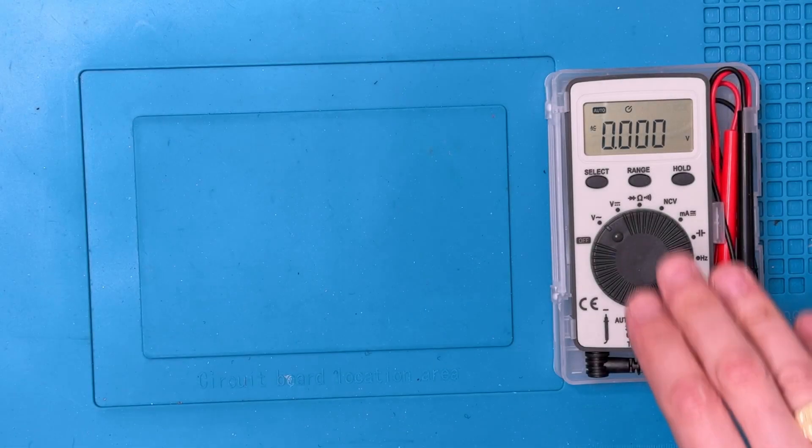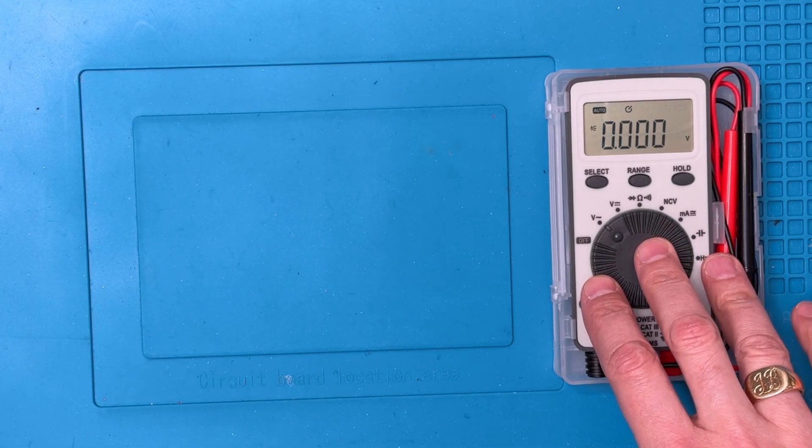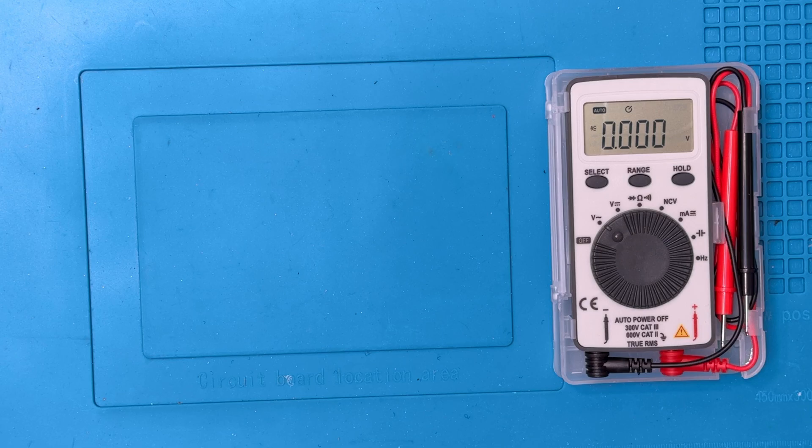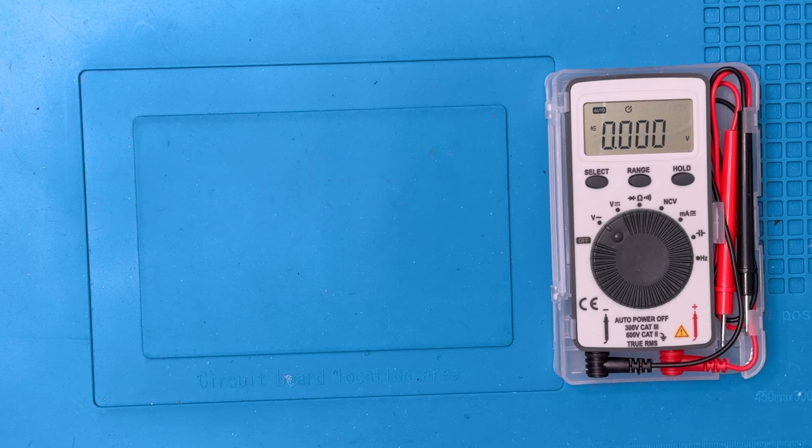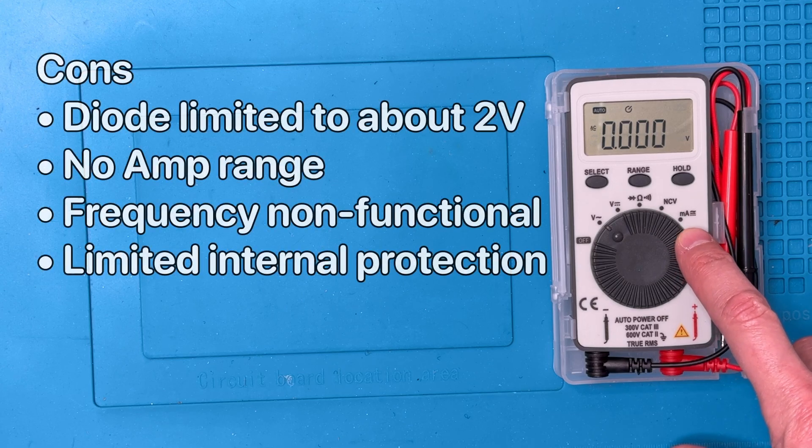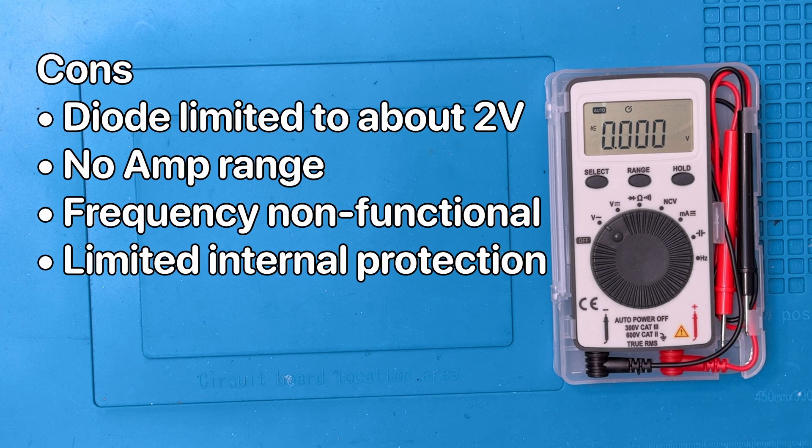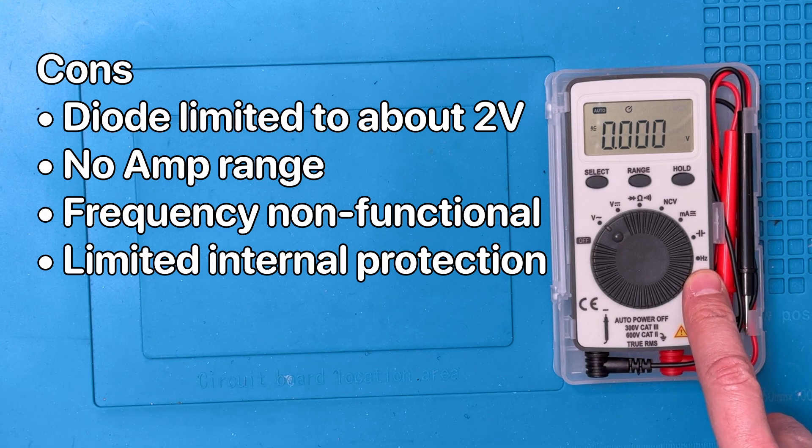In summary, this is a nice little meter that performs almost all the basic measurements. With the exception of frequency, all the other modes work quite well. It is decently accurate for a meter that you are probably not getting for its accuracy. Non-contact voltage is excellent, and rivals many larger, more expensive meters. It does have a milliamp range, but no amp range. Diode check is functional, but a little limited. As I mentioned before, I was not able to make frequency measurements work.